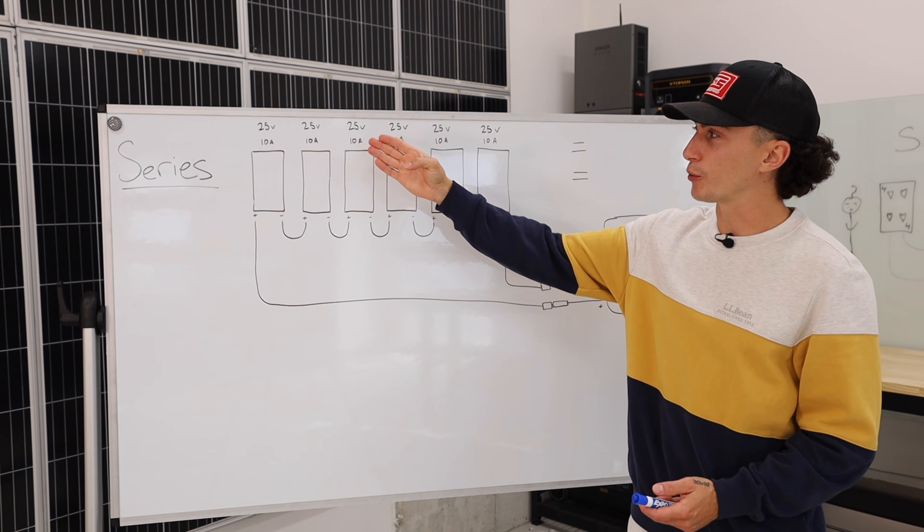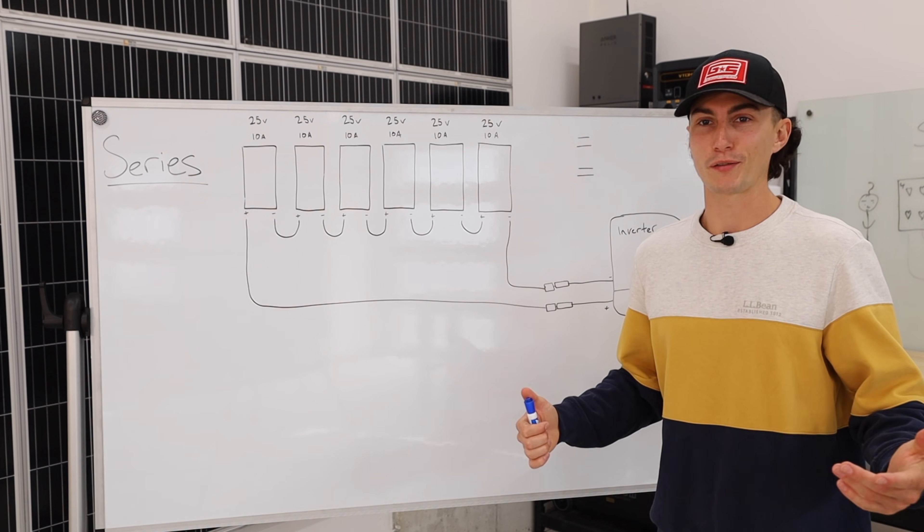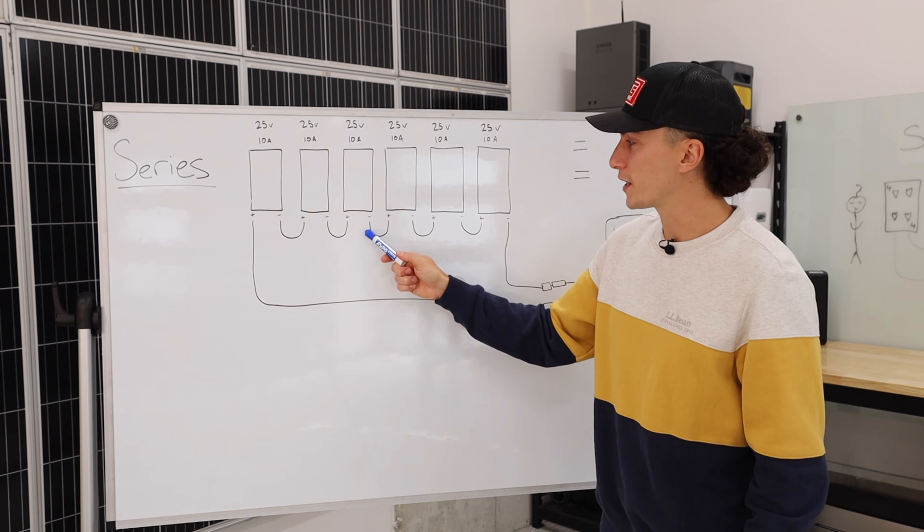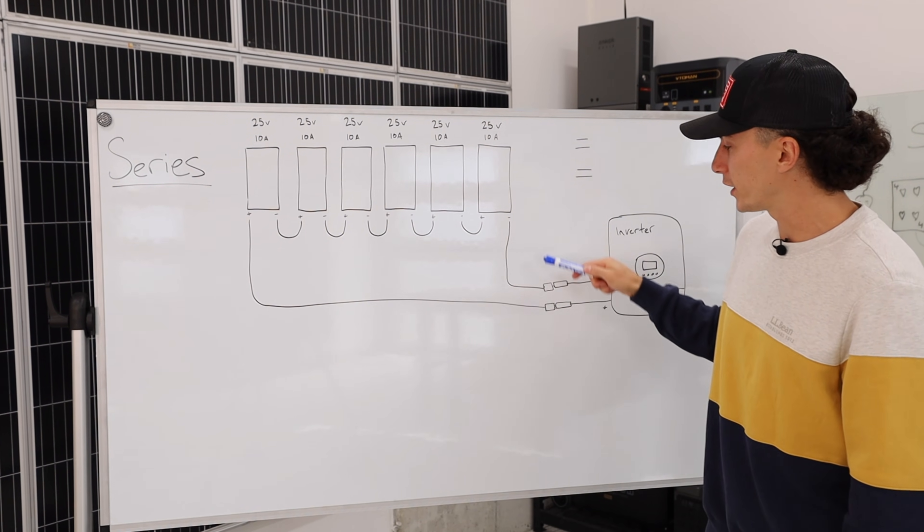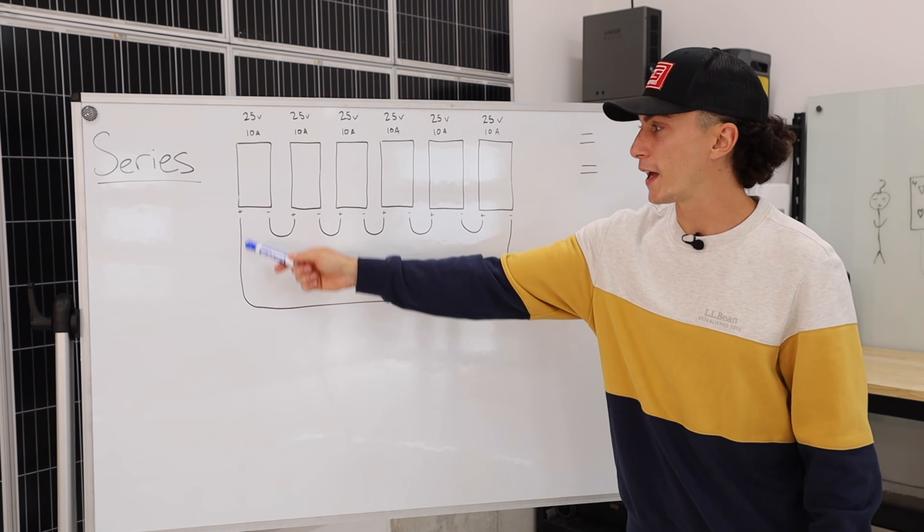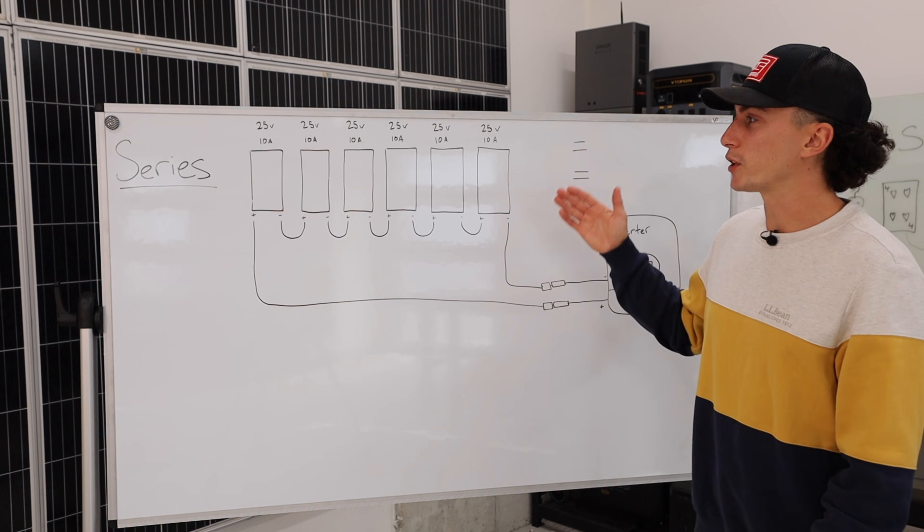In today's example, we're looking at a real life array that we actually just assembled a week ago, which is six 200-watt solar panels. For the sake of easy math, we put each solar panel at 25 volts and 10 amps—in reality they're like 9.8 amps and 23 volts. When you wire stuff in series, you daisy chain the positives and the negatives together.